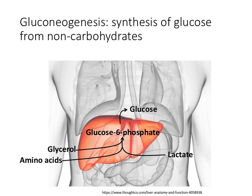Gluconeogenesis is the synthesis of glucose from non-carbohydrate precursors, like lactate, amino acids, and glycerol. Note that all of these are converted first to glucose-6-phosphate, which is trapped inside hepatocytes. Glucose-6-phosphatase is specifically required to hydrolyze that phosphate off to allow glucose to be released into the blood.